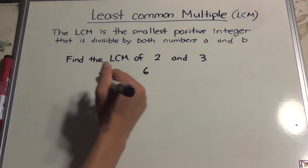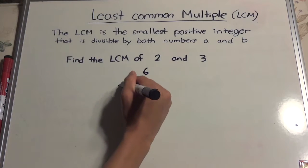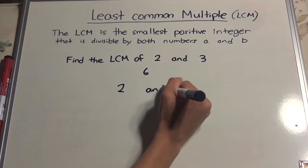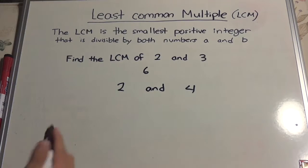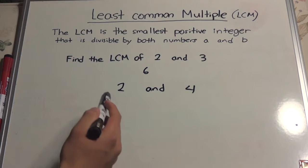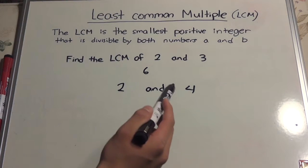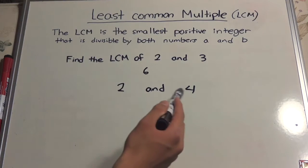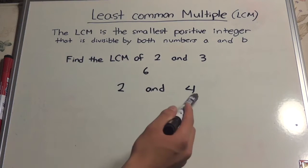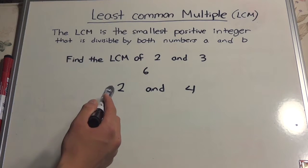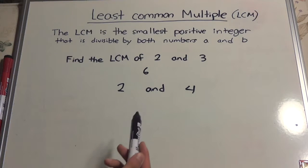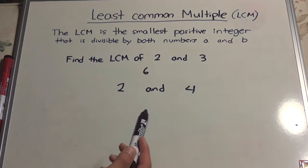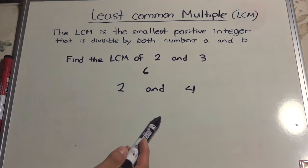If we were asked to find the LCM of 2 and 4, the smallest number that is divisible by both of these numbers is 4, because if you do 4 divided by 2 and 4 divided by 4, you get a whole number without any remainder.